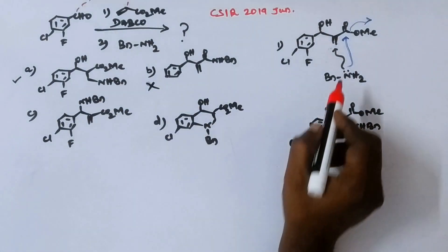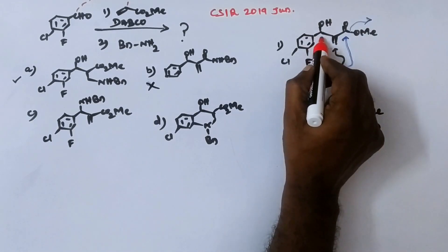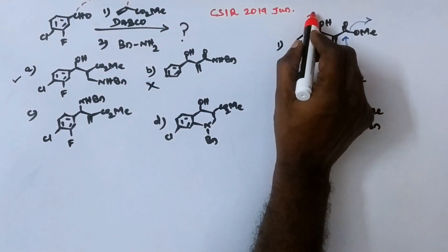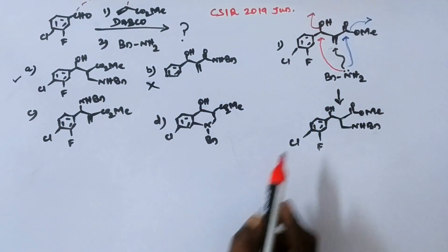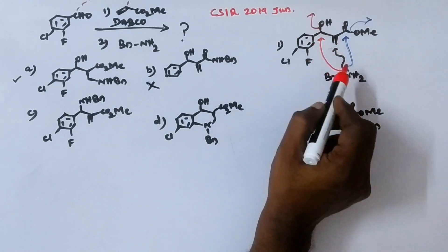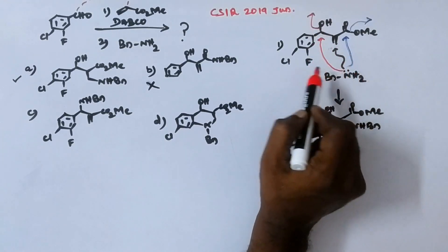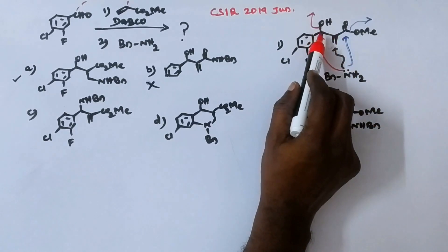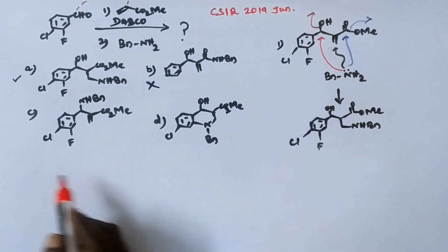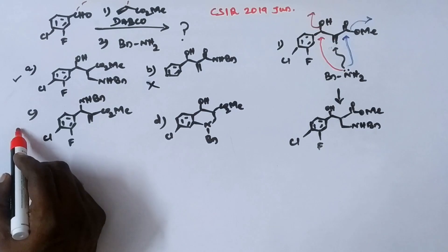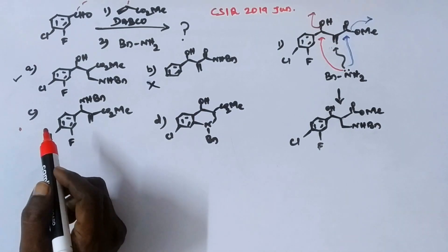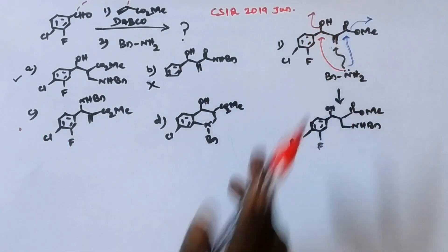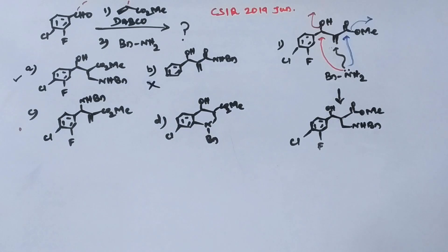In case this nitrogen lone pair attacks here, eliminating OH group. That means a substitution reaction SN1 or SN2. This substitution, amine substituted in the place of hydroxyl group. Where is it? Option C. Is this reaction possible? Hydroxyl group is not at all a leaving group.